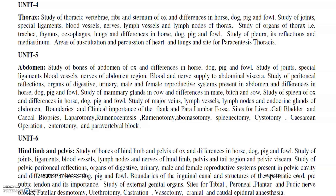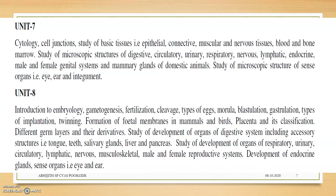In unit 6, hind limb and pelvis, you will be dealing with the osteology, bones, the vessels, the nerves and other — vasectomy, urethrectomy, castration, patellar desmotomy in the hind limb and pelvis, etc. Unit 7 is the main portion — histology. You will be studying the cellular properties and all histological properties of the body. In unit 8, you will be studying embryology — how does an organ form, how do the membranes form. Units 7 and 8 together constitute paper 2, that is histology and embryology.